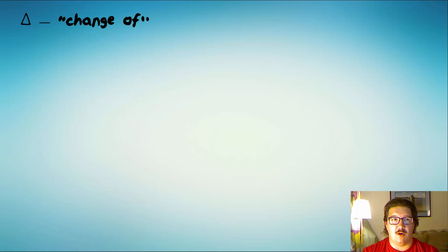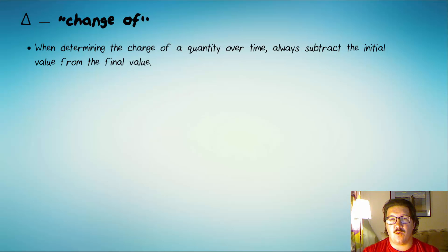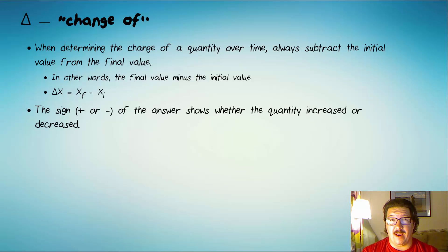I'd like to talk about delta for a moment. I know you've seen it before. I know that you know it means change of. But it's important to make sure we know how to calculate it precisely. So when determining the change of a quantity over time, we always subtract the initial value from the final value. In other words, you take the final value minus the initial value. Like this, delta x equals xf minus xi, final minus initial. And when you do that, the sign, whether the answer is positive or negative on your answer, will show you whether the quantity increased or decreased.